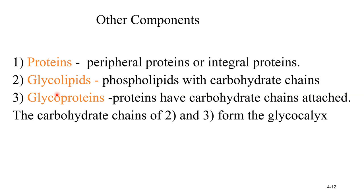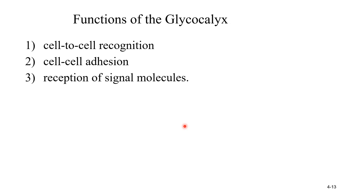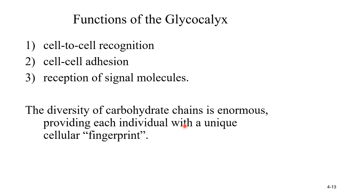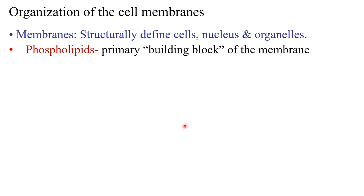The carbohydrate chain of glycoproteins is called the glycocalyx. The function of the glycocalyx — which includes proteoglycans, glycoproteins, and glycolipids — is to make the cell unique. They also help in cell-to-cell recognition, cell-cell adhesion, and reception of signal molecules, also acting as receptors. The diversity of carbohydrate chains is very large, enormous, providing each individual with a unique identity, and it can act as a fingerprint to identify and separate among us.